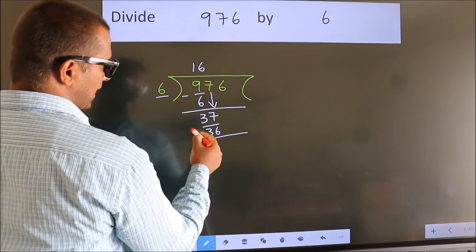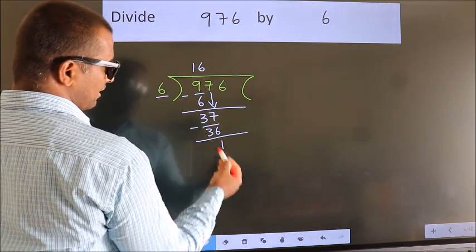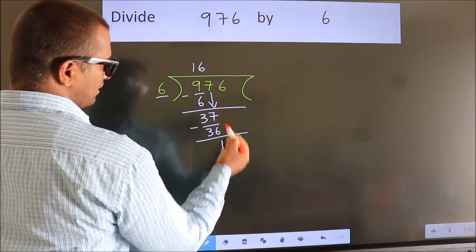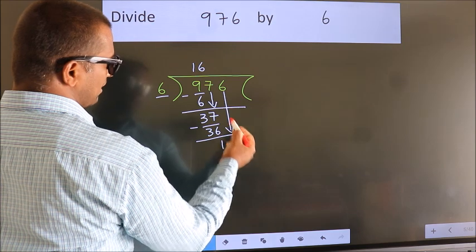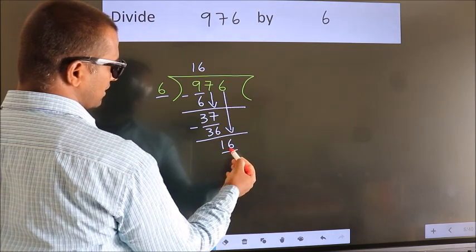Now we subtract. We get 1. After this bring down the beside number. So 6 down. So 16.